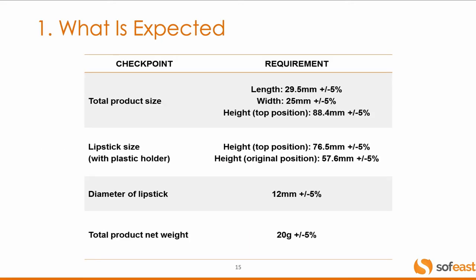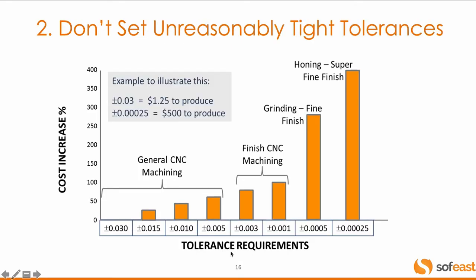This is an example with different measurement points for a lipstick — for example, lipstick diameter 12 mm, plus or minus 5%. This is very loose tolerances, just an example. Checkpoint by checkpoint, this is what your inspector will check and confirm, with the requirement and tolerance wherever possible. Talking about tolerances: the tighter you go, the higher the cost. Be realistic — you need to understand a little bit about the production process.